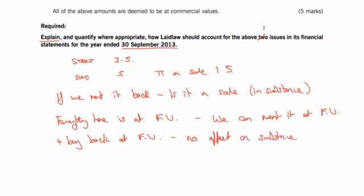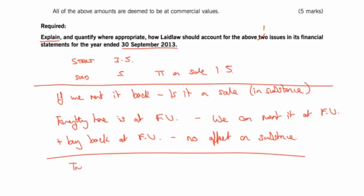But that's just like any normal thing. We can always buy a property regardless of who we are — we can always buy it at fair value. So no effect on the substance then. Everything seems okay, so the treatment is correct. They have actually sold it in substance for 5 million, and then we just put the rentals to the income statement as an operating lease, as normal. There is nothing strange going on here that suggests we haven't really sold the property, because everything's at fair value. Everything is normal.